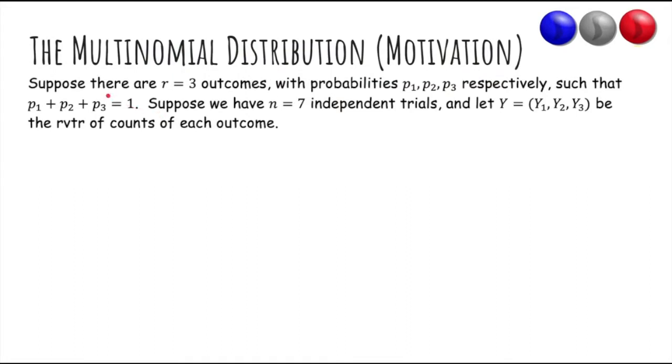Okay, so now let's suppose that there are three outcomes with probabilities p_1, p_2, and p_3 that add up to one. Suppose you have seven independent trials, and let Y be the random vector of counts of each outcome.